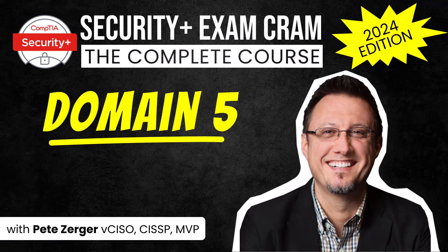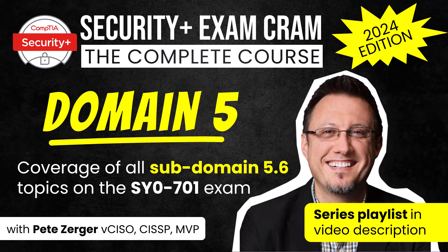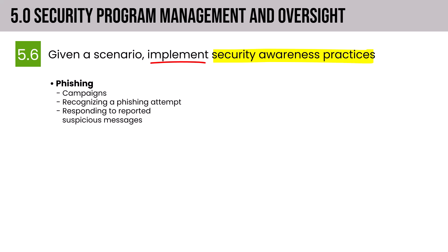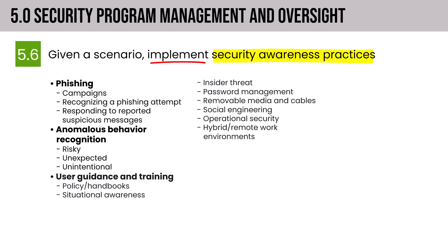In Section 5.6, we'll be focused on security awareness practices. The syllabus asks us to implement security awareness practices — various forms of security awareness training. We'll touch on topics like phishing, anomalous behavior recognition, helping users recognize risky, unexpected, or unintentionally bad behavior, an array of user guidance and training practices, reporting and monitoring, and end-to-end examination including development and execution.